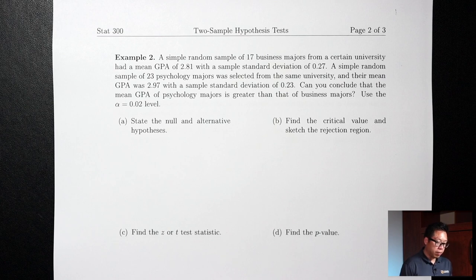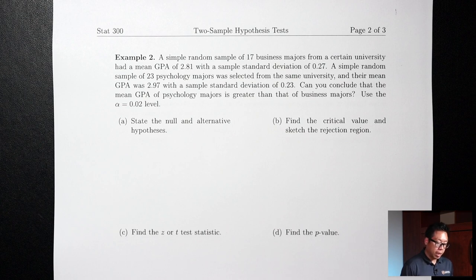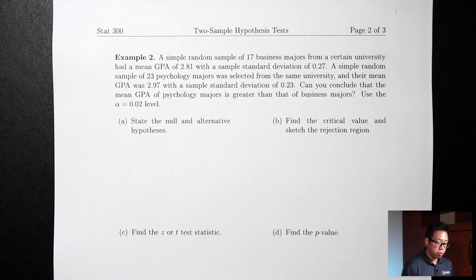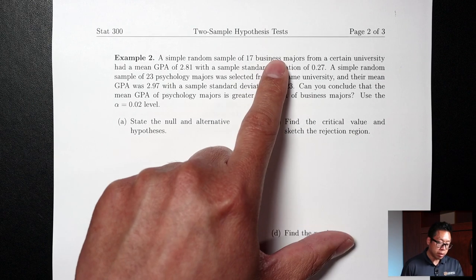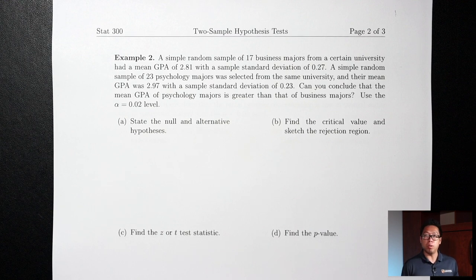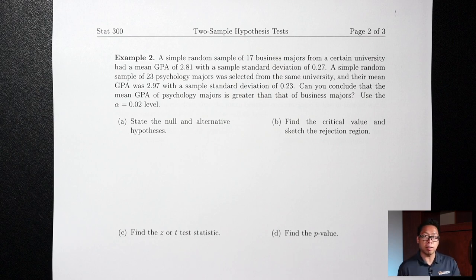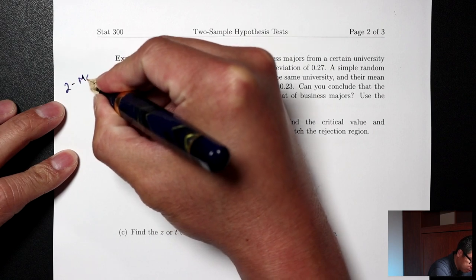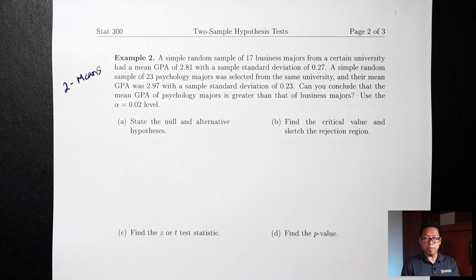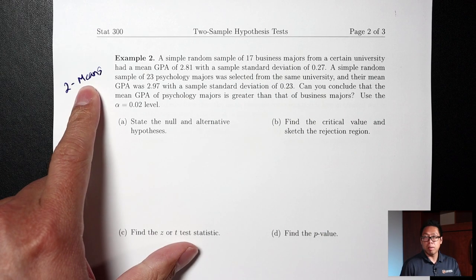Example 2. A simple random sample of 17 business majors had a mean GPA of 2.81 with a sample standard deviation of 0.27. A simple random sample of 23 psychology majors had a mean GPA of 2.97 with a sample standard deviation of 0.23. Can you conclude that the mean GPA of psychology majors is greater than that of business majors? Use alpha equals 0.02. We're talking about two groups, so this will be two proportions or two means. We see the words 'mean' and 'standard deviation,' so this is definitely a two means question. For means, we use T's.